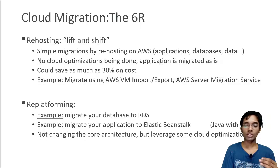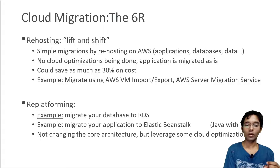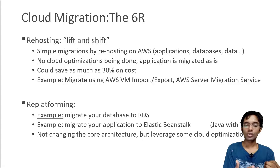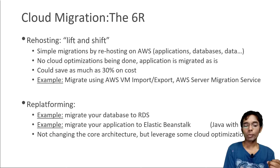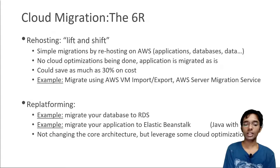With rehosting, you can still leverage some cost optimization from the cloud — you could save around 30% on cost, for example by moving a virtual machine to EC2 and leveraging EC2 Reserved Instances for long-term discounts. Examples include migrating a virtual machine using AWS VM Import/Export or using the AWS Server Migration Service. You migrate the entire virtual machine to AWS as-is — that is rehosting.